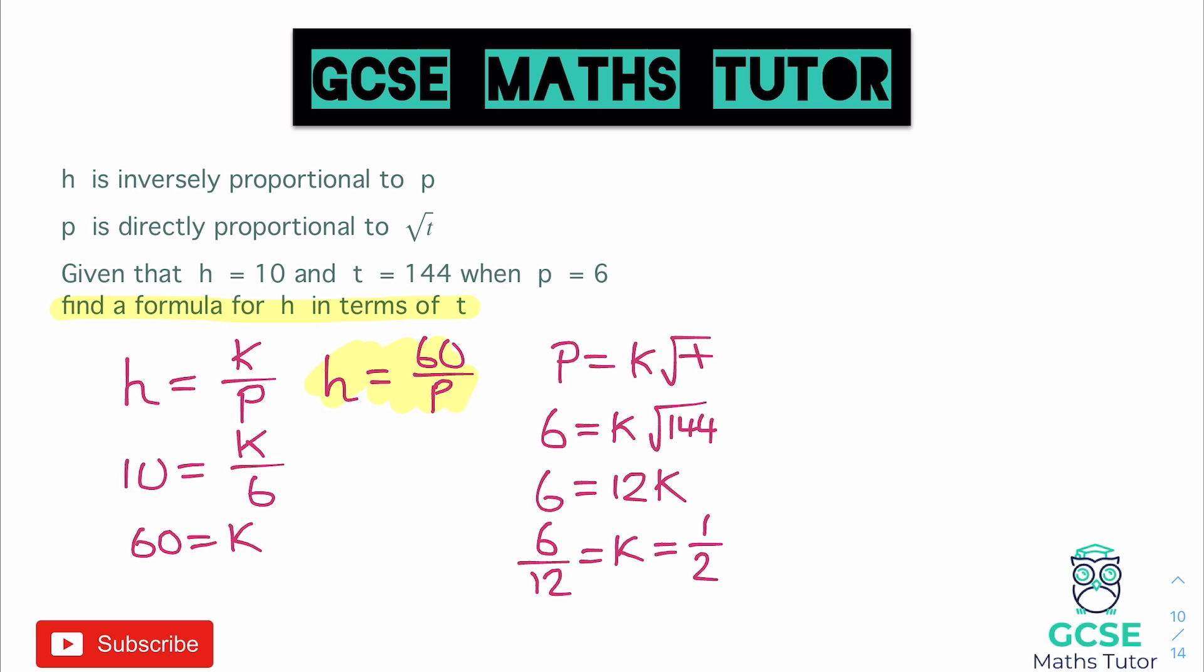And it's up to you. You could obviously change it to 0.5 if you prefer. But I prefer working with fractions when I'm not working with a calculator. So for this let's just write our formula. So we have p is equal to one half root t. And there we go. There's our second formula looking at the direct proportion.